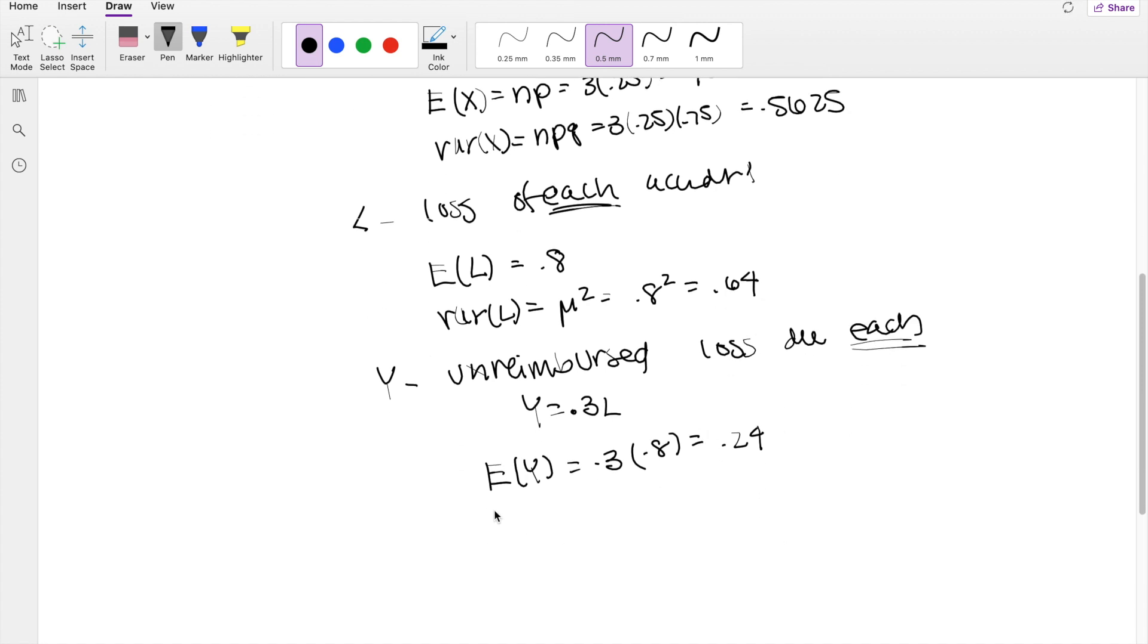And likewise, the variance of Y is equal to the variance of 0.3L. When you take that 0.3 out, it becomes 0.3 squared variance of L. So that's equal to 0.3 squared times 0.64, which is equal to 0.0576.